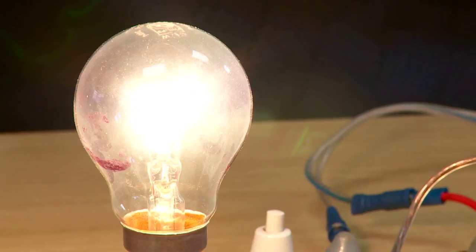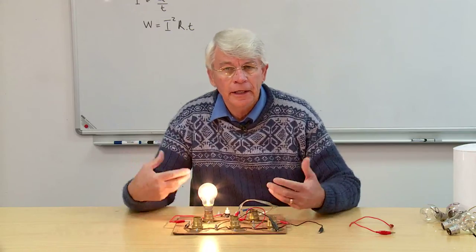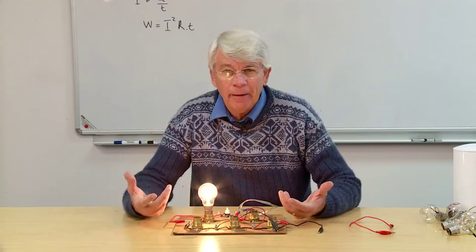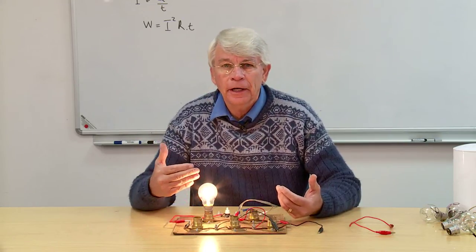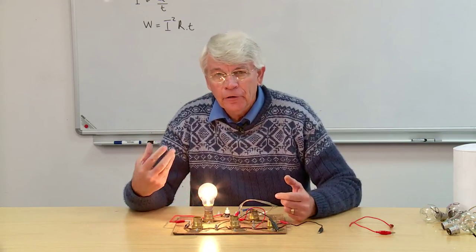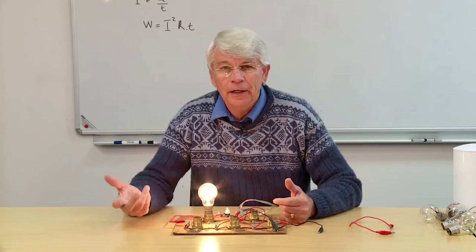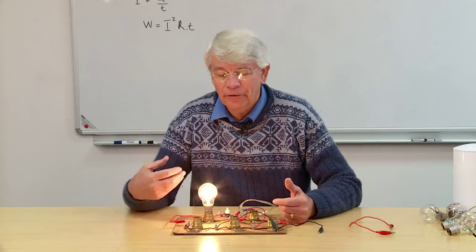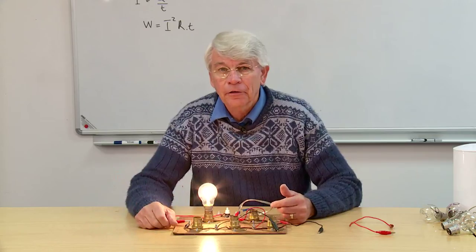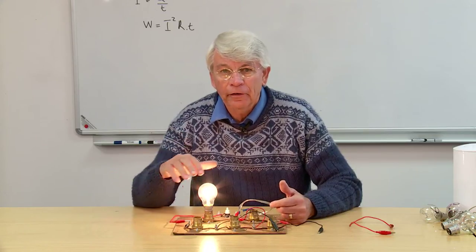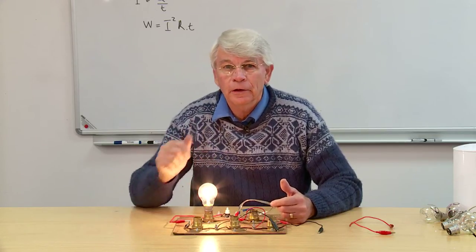There's a current flowing through here. What do we measure current in? It's amps. What is an amp? Say two amps are flowing through here — two amps means two coulombs per second. It gives us a measure of the rate at which electricity is flowing, the rate and speed with which these coulombs are moving through the circuit.